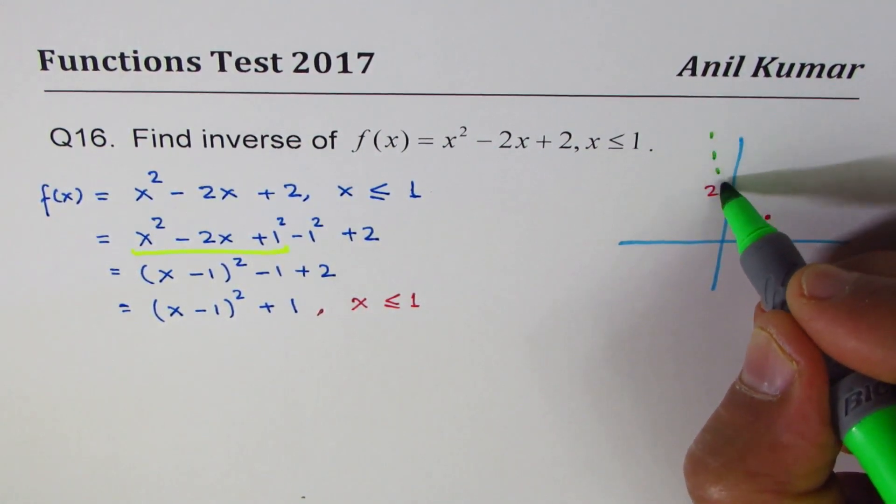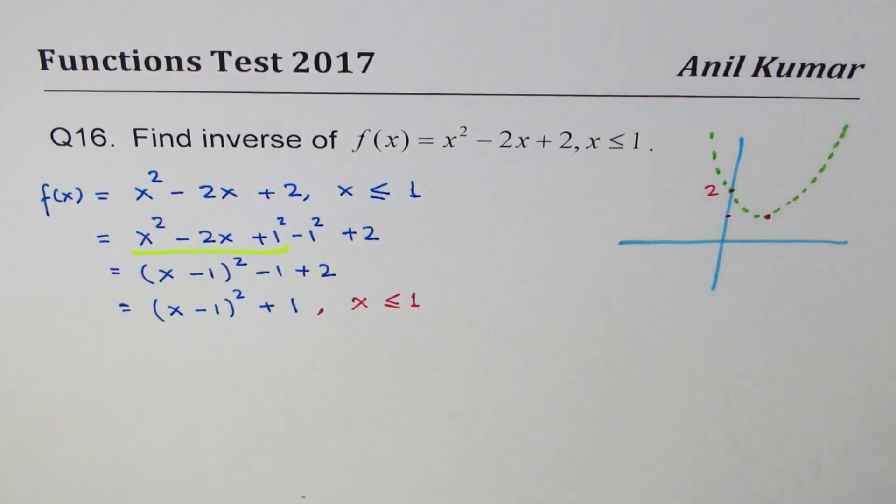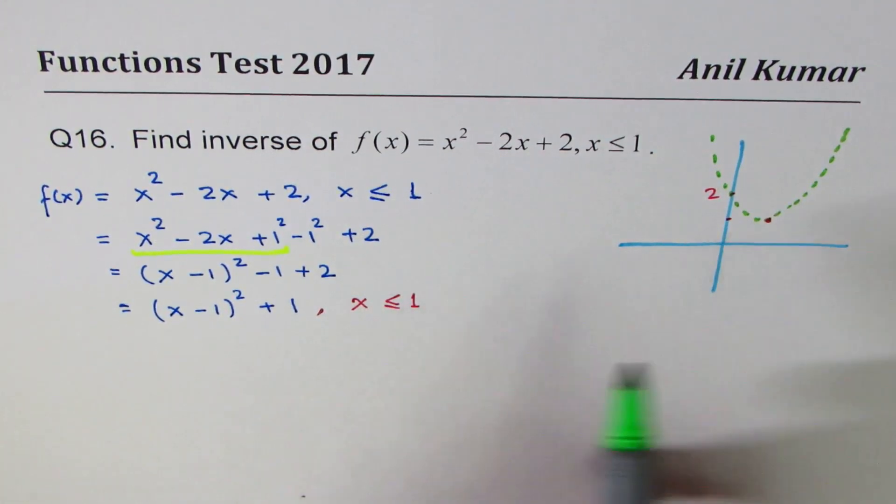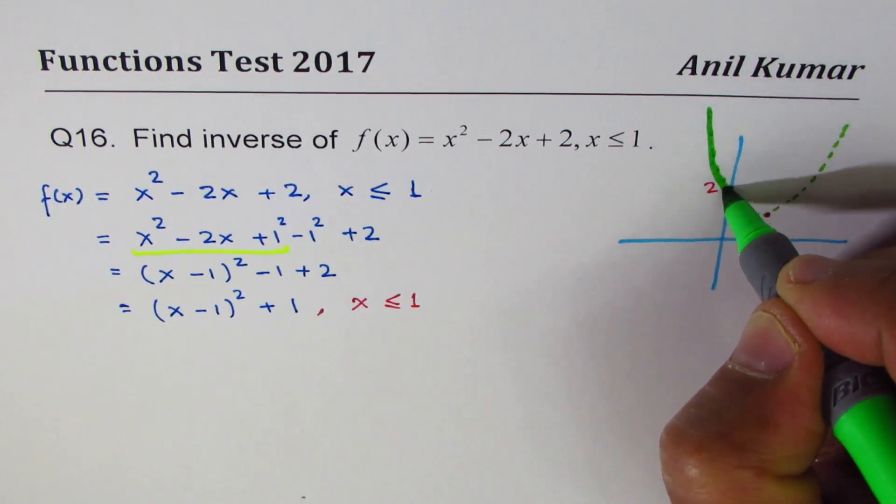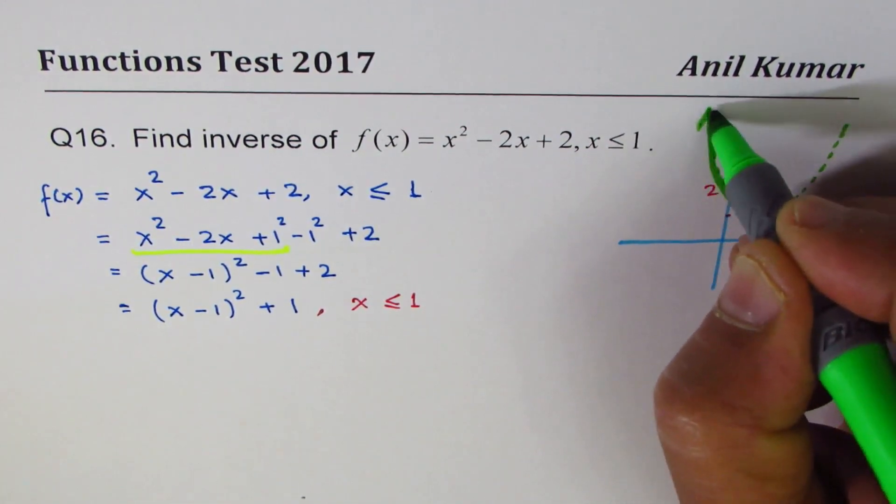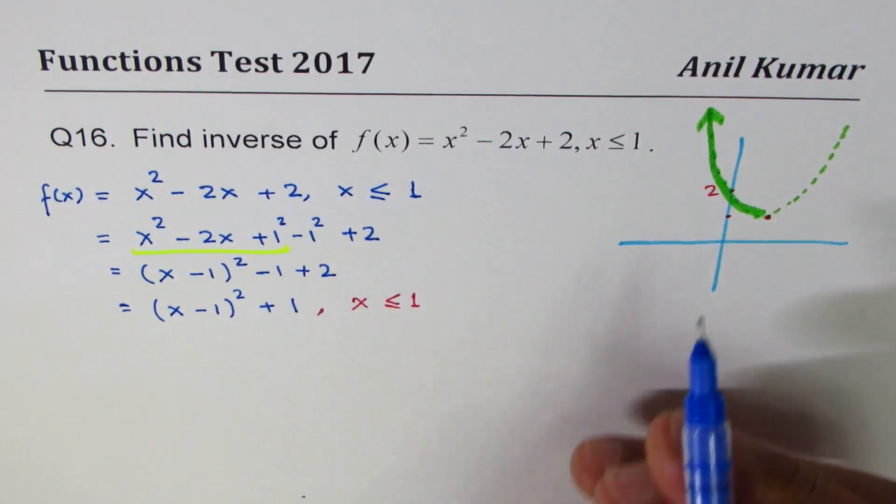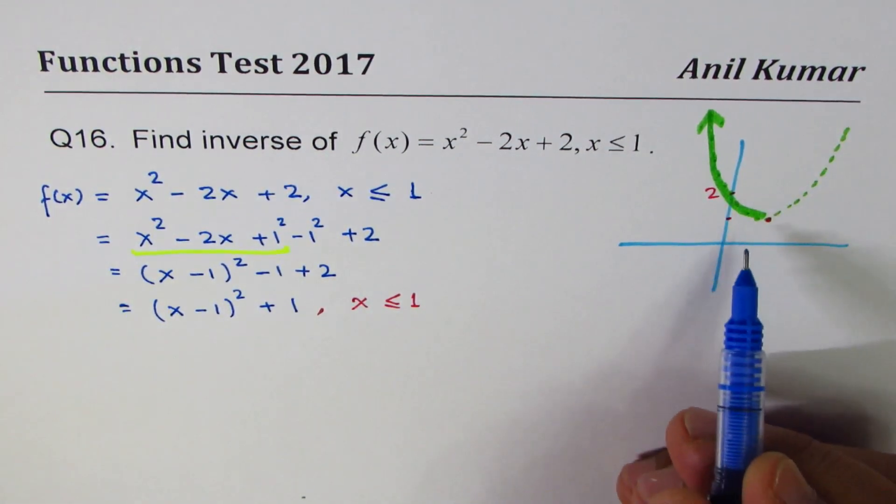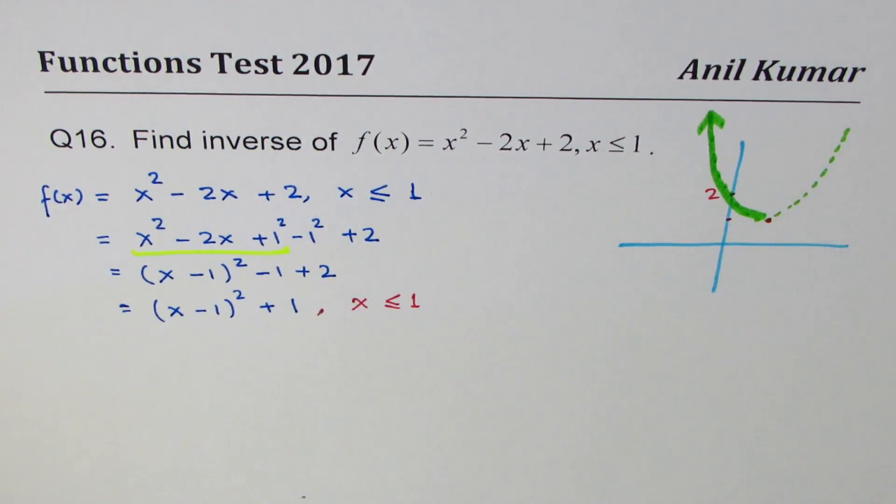Since x ≤ 1, we are only considering the left side of this graph. That's important to understand. This is the part which is of our interest. x ≤ 1, we are trying to find its inverse.